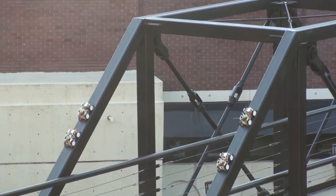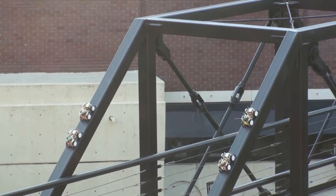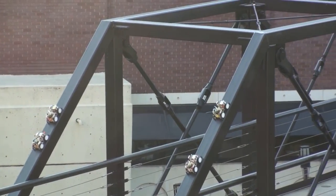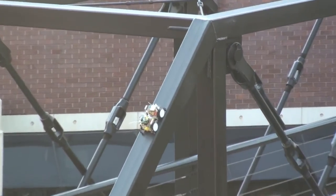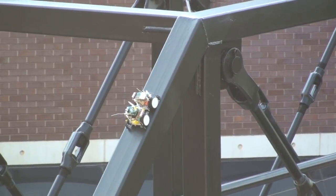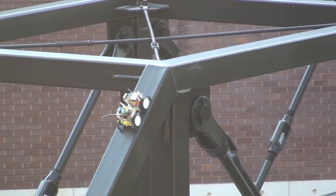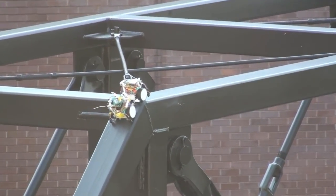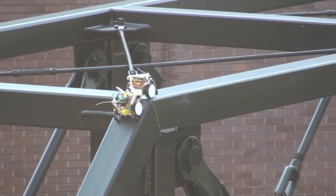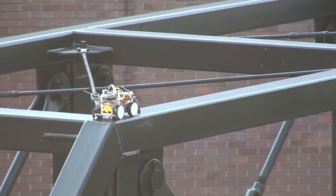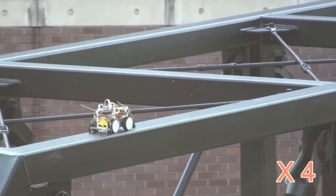To further validate the mobile sensor performance, field testing is carried out on a steel pedestrian bridge. A four-node mobile sensor network is deployed to measure vertical vibrations at the top plane. Commanded by a wireless server next to the bridge, each mobile sensor starts from the inclined member, climbs over the corner, and moves on the top plane of the bridge.